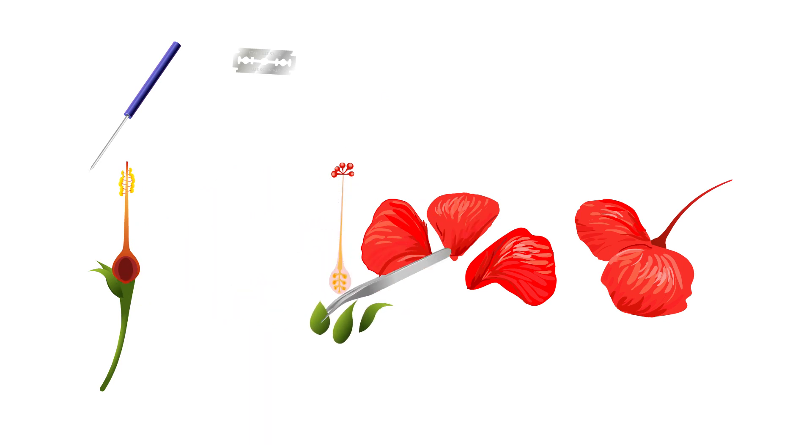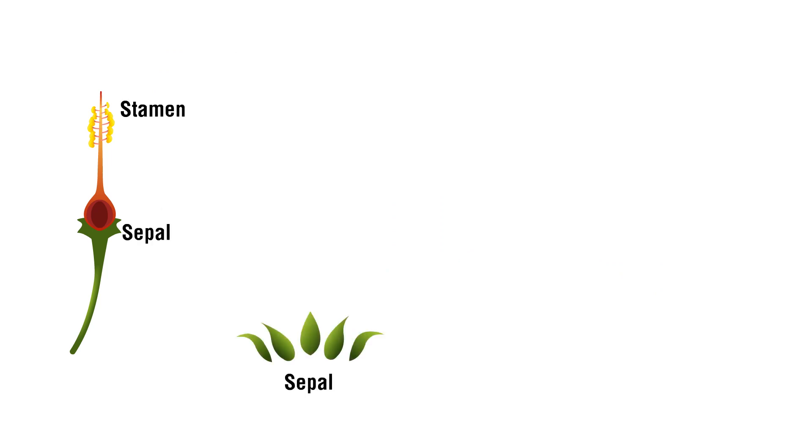Pull out the individual parts with the help of forceps and needle one after another. Observe and label each part of the flower carefully.